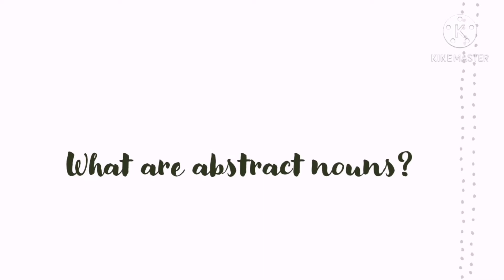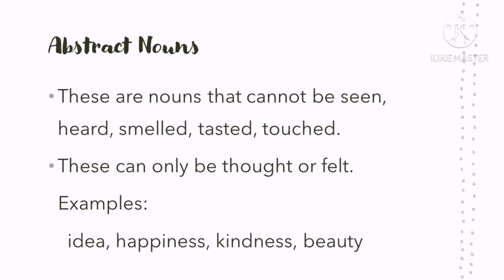The other group falls under abstract nouns. Abstract nouns are nouns that cannot be seen, heard, smelled, tasted, and touched. In other words, with abstract nouns, we cannot use our senses because these cannot be touched or felt. Examples of abstract nouns include idea, happiness, kindness, and beauty.